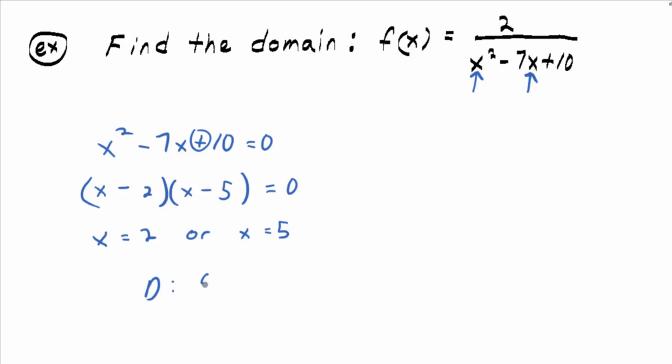If you're using set builder notation, it would be the set of all x such that x does not equal 2, the or changes to and here, and x does not equal 5. And remember, when we don't write it down, we assume x is any other real number other than those.